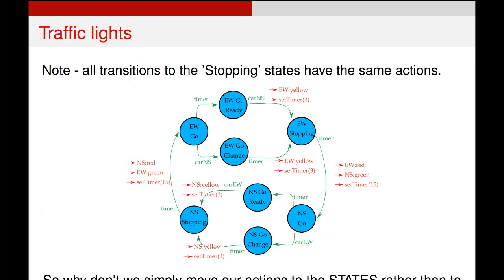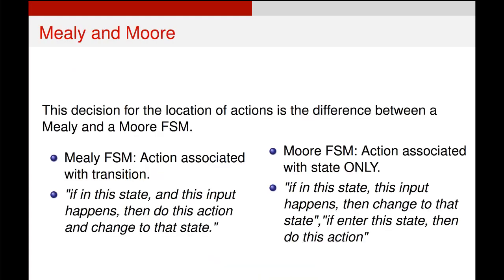The good news is that there is a solution. The solution is to take our actions from the transitions and put them on the states. This is the difference between two different types of finite state machines, a Mealy finite state machine and a Moore finite state machine.